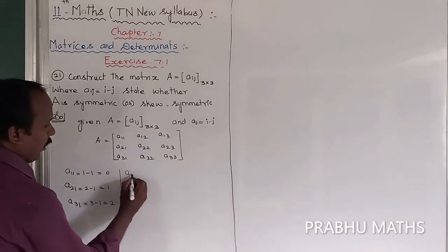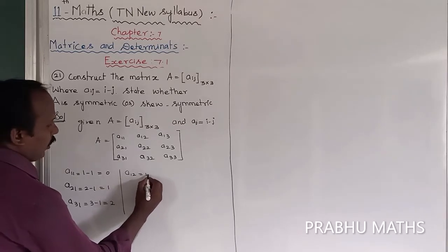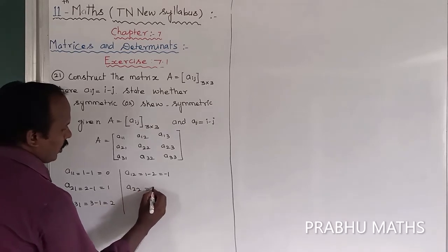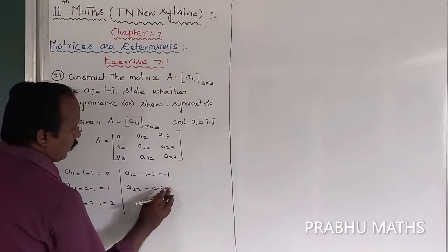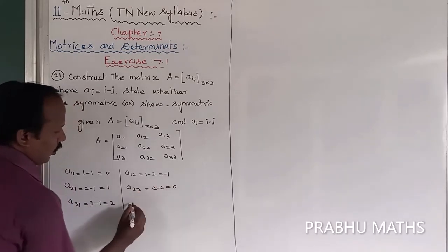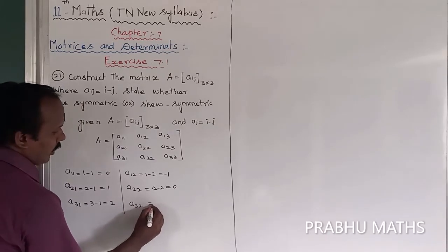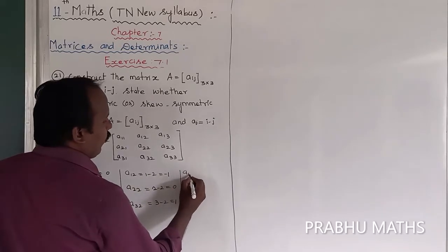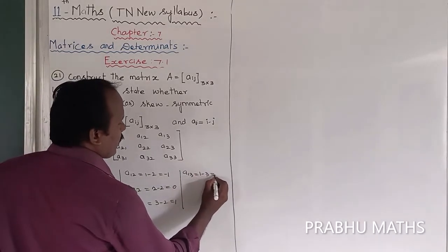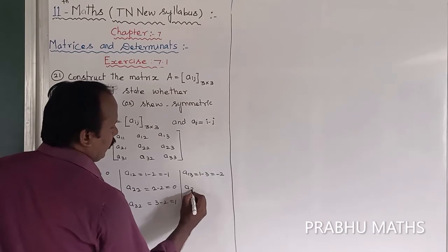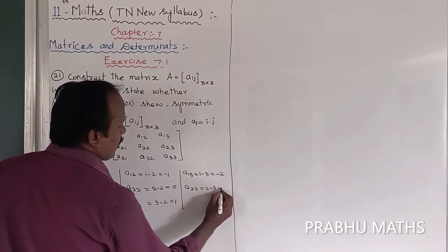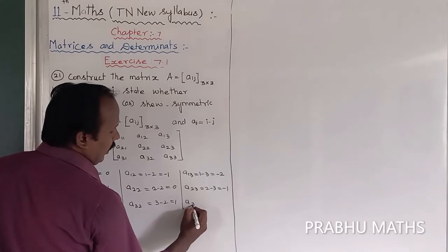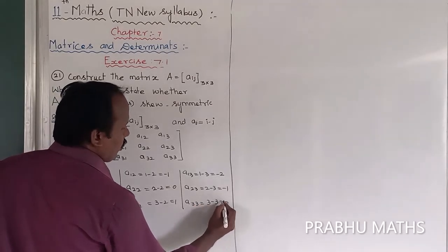Next, A12 equals 1 minus 2, which equals minus 1. A22 equals 2 minus 2, which equals 0. A32 equals 3 minus 2, which equals 1. Next, A13 equals 1 minus 3, which equals minus 2. A23 equals 2 minus 3, which equals minus 1. A33 equals 3 minus 3, which equals 0.